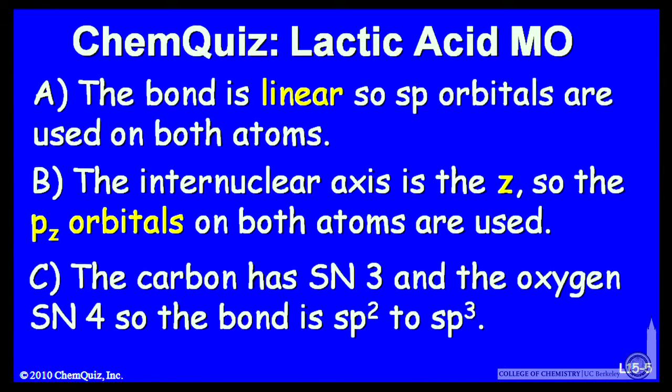Let's look at possible explanations for each of the answers. A, the bond is linear, so SP orbitals are used on both atoms. B, the internuclear axis is Z, so the Pz orbitals on both atoms are used.